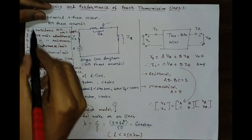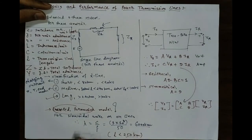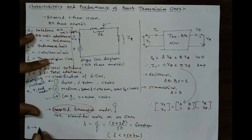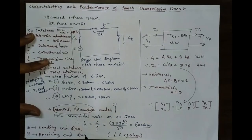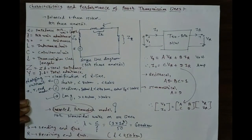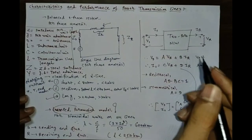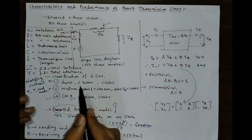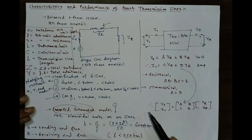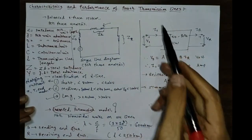Whenever we use subscript S it stands for sending end quantity, and when we use subscript R it stands for receiving end quantity. You have to remember all these notations. With this we are closing today's lecture. In the next lecture, we will first understand voltage regulation and transmission efficiency, and then discuss the short transmission line — finding the ABCD parameters, drawing the phasor diagram, and finding the voltage regulation and transmission efficiency.